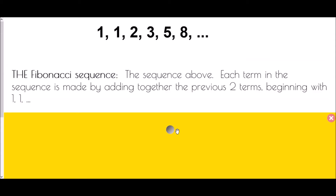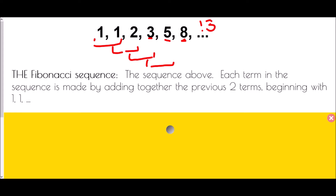The Fibonacci sequence is produced where each term is made by adding the previous two terms together, and it begins with one and one. So: 1 plus 1 is 2; 1 plus 2 is 3; 2 plus 3 is 5; 3 plus 5 is 8. If we were to continue: 5 plus 8 is 13, and then 8 plus 13 is 21, and we could keep going on and on.